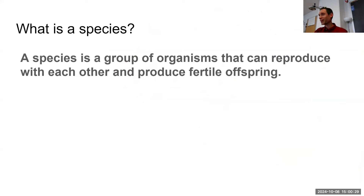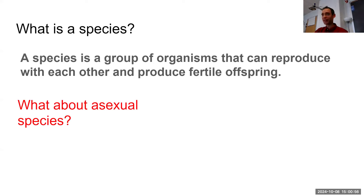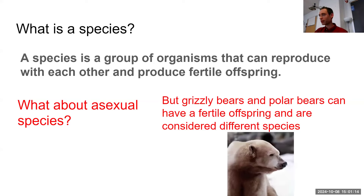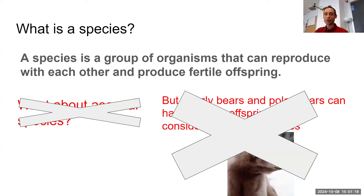Our working definition: a species is a group of organisms that can reproduce with each other and produce fertile offspring. Yes, there are complications — asexual species like bacteria don't reproduce sexually, and grizzly bears and polar bears can produce fertile offspring yet are considered different species. But we're keeping it simple and going with this definition.